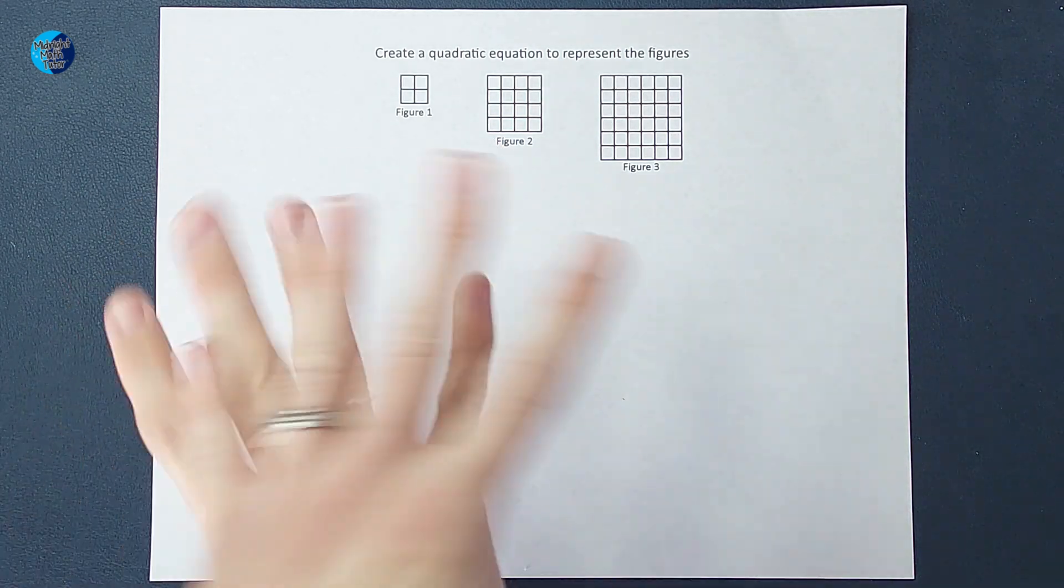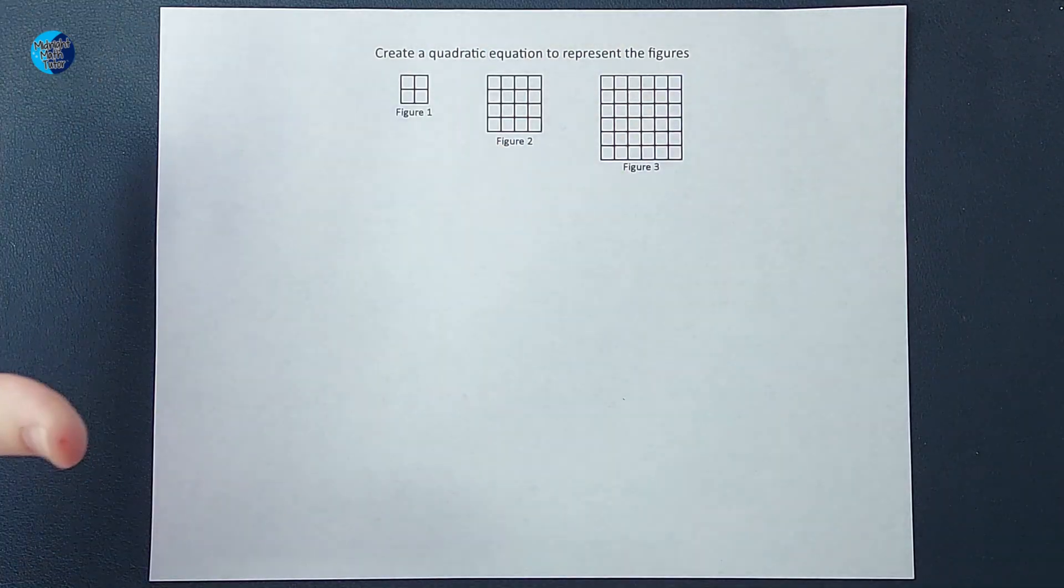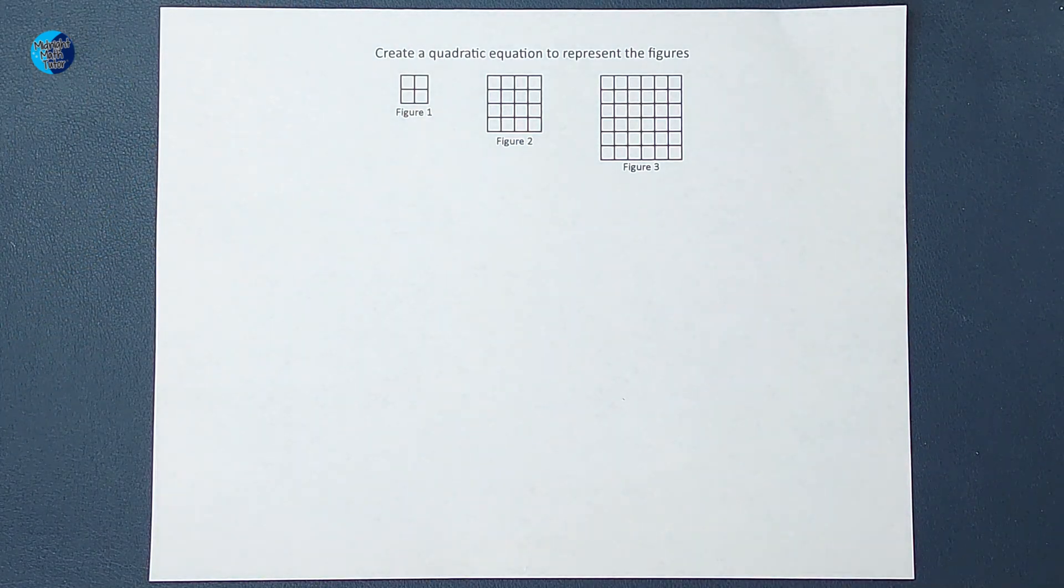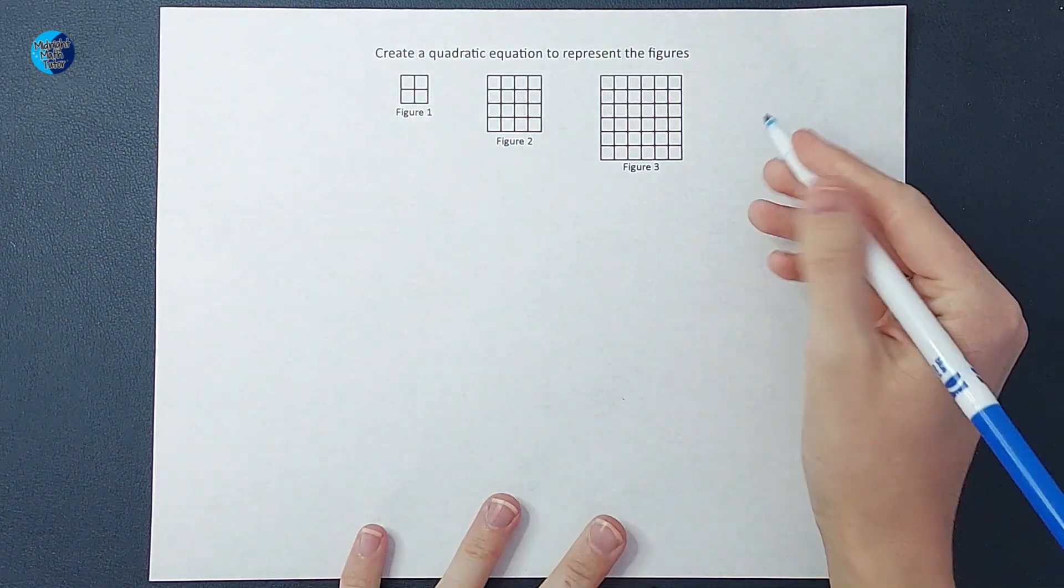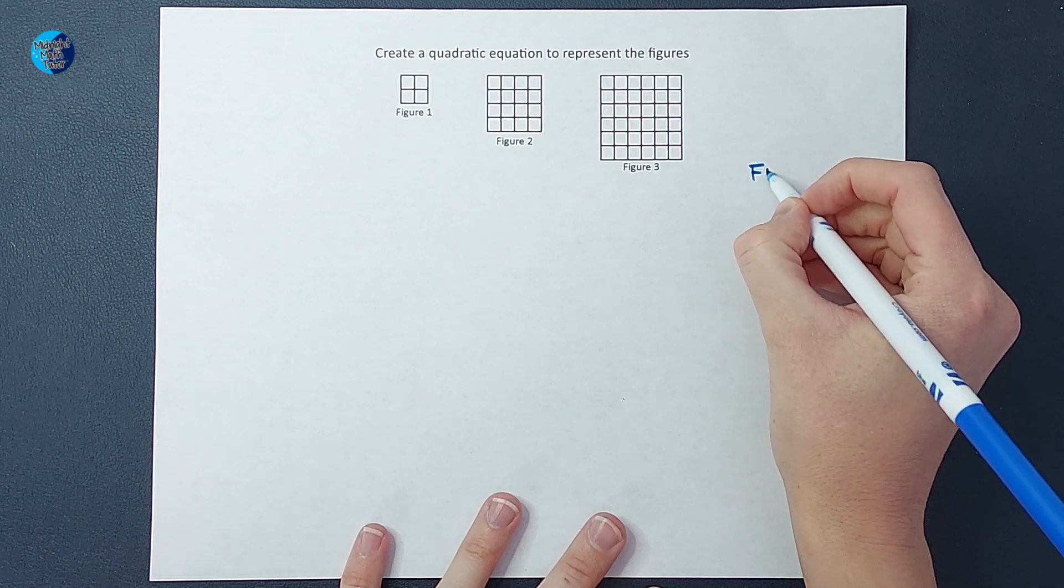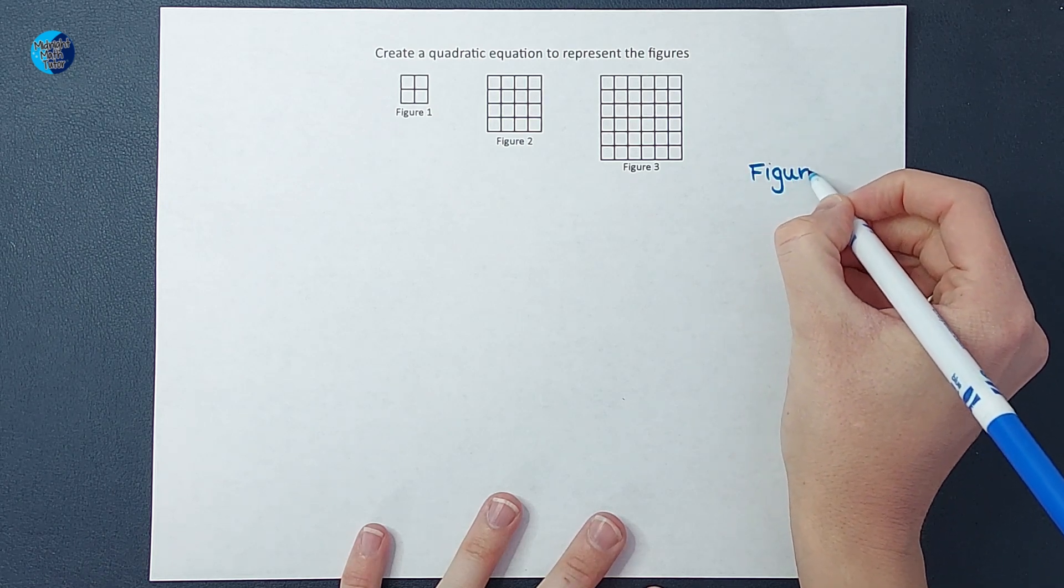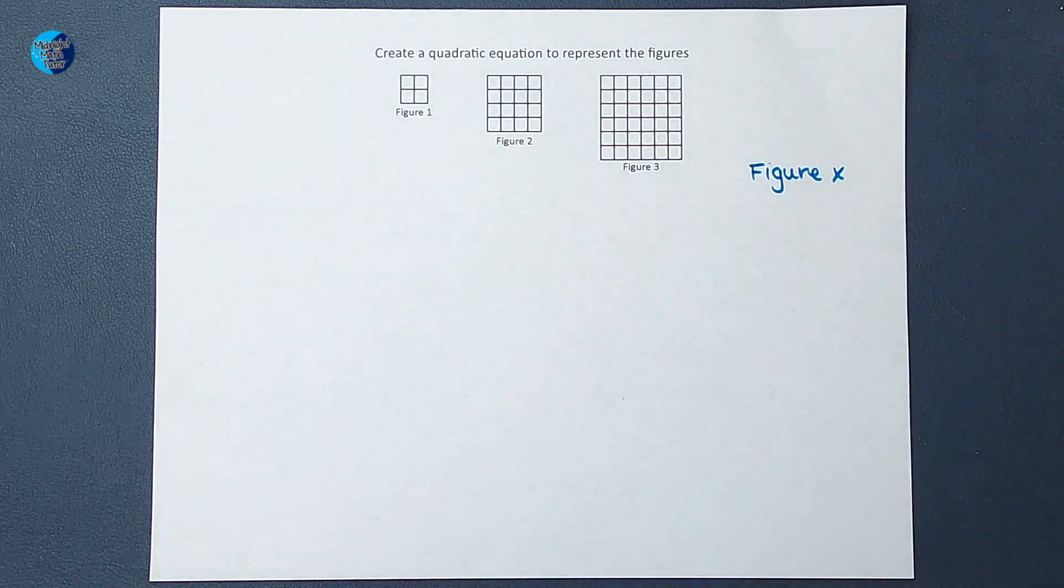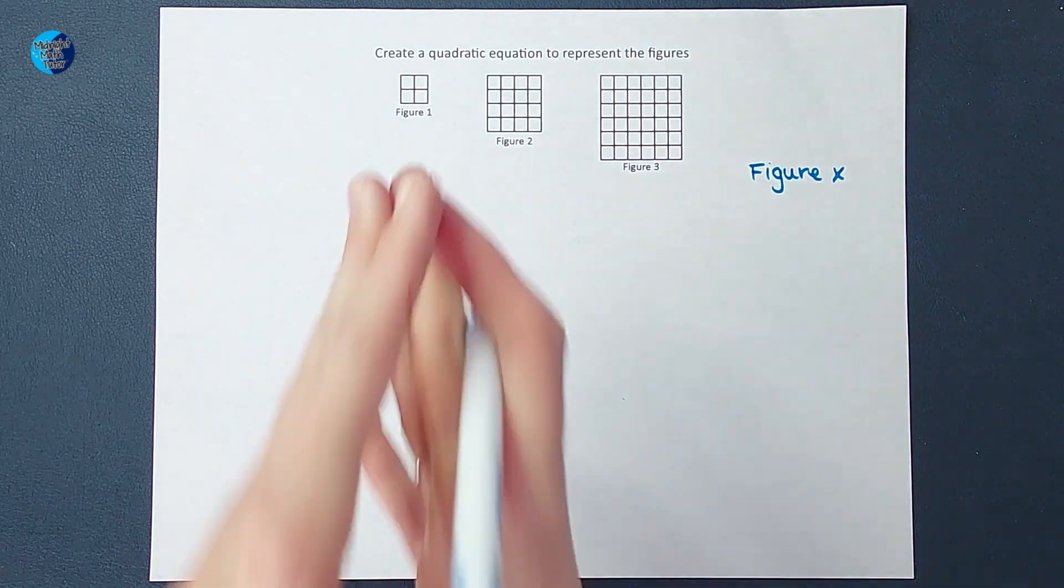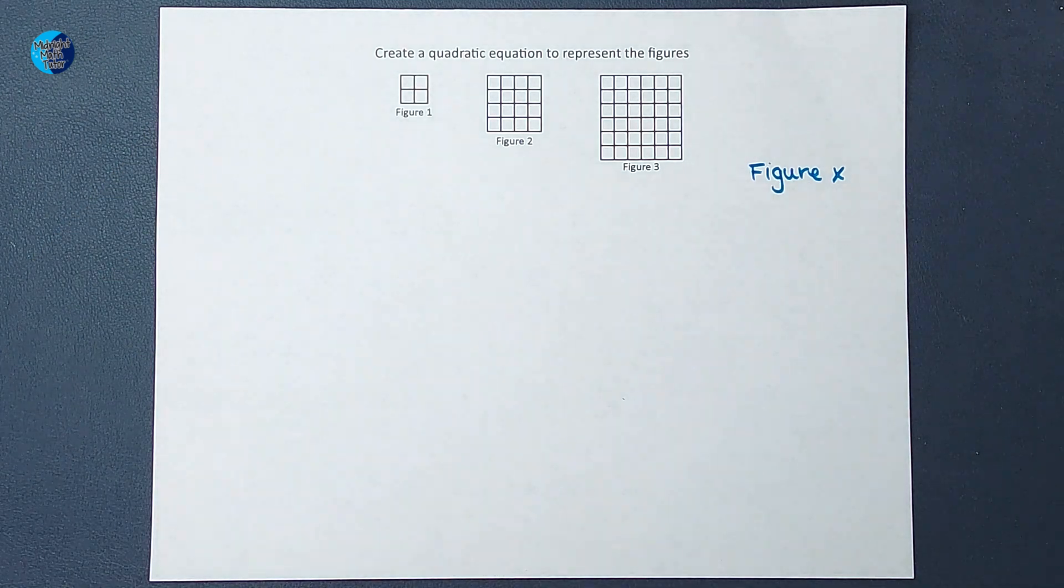So we know whatever, as this gets bigger, we might call it figure x. That's what we want to know. Figure x, meaning I can plug in whatever number I want. It's going to be a square.